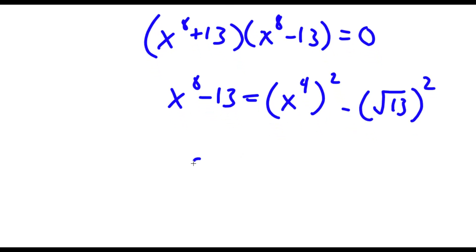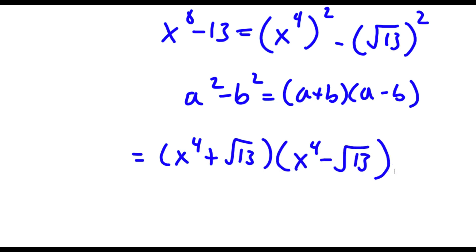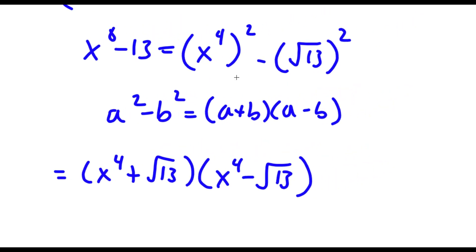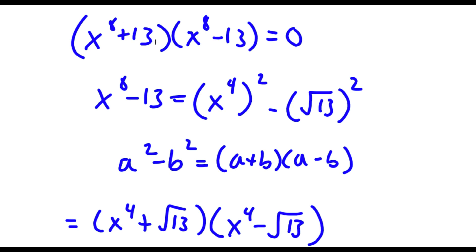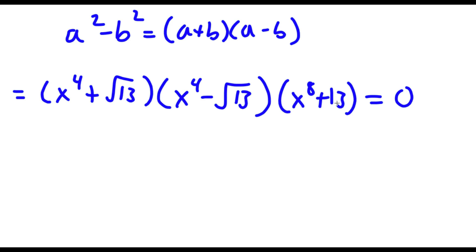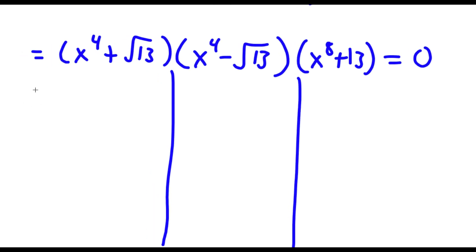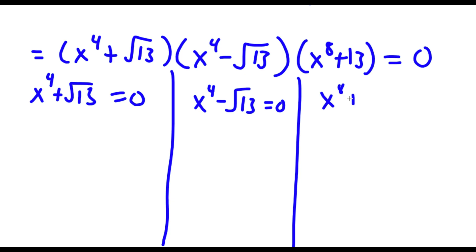And again these two are both to the power of 2. Remember, if I have something in the form a squared minus b squared, this equals a plus b times a minus b. So I'm going to have x to the power of 4 plus the square root of 13, times x to the power of 4 minus the square root of 13. And I still have my x to the power of 8 plus 13 from the start, so all of this equals 0. So now I have three equations: x to the power of 4 plus root 13 equals 0; x to the power of 4 minus root 13 equals 0; and x to the power of 8 plus 13 equals 0.